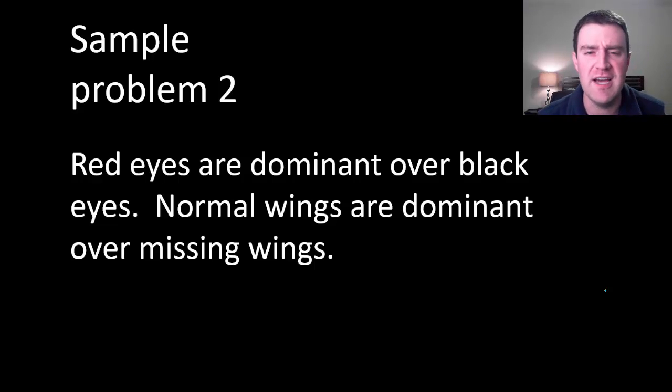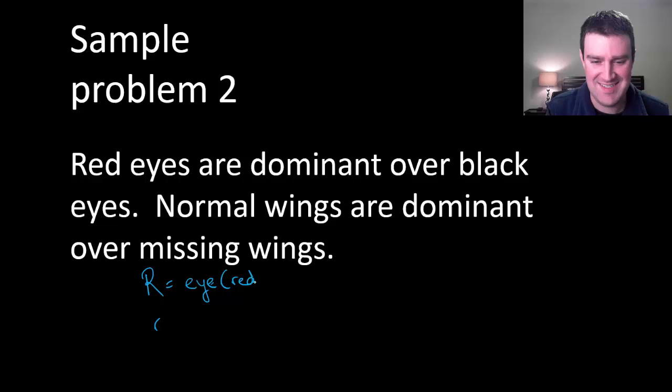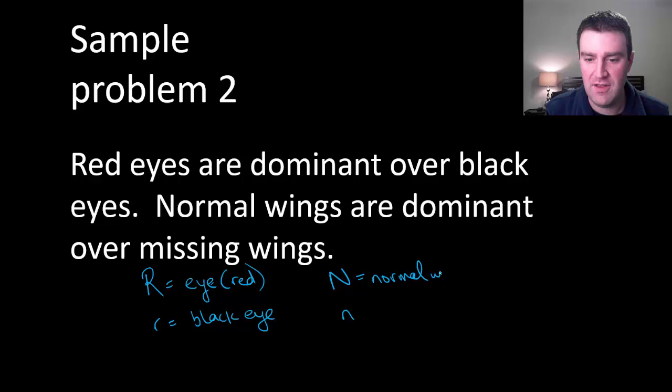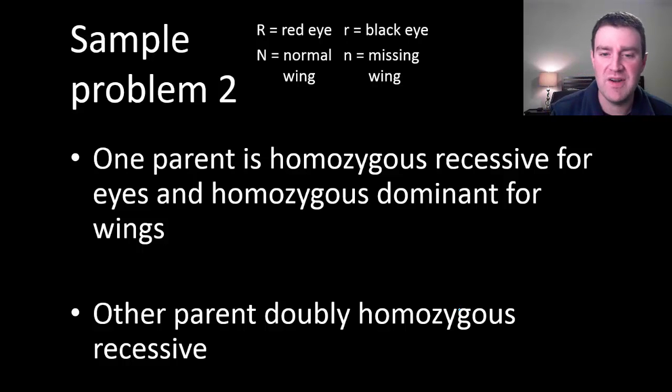Let's work another problem. What if red, looks like we're going to fruit flies here now. What if red eyes are dominant over black eye color? So let's use maybe R's again and maybe the uppercase is the dominant trait. Probably should have written red there. And the lowercase is the recessive trait, so black eye color. And then normal wings are dominant over missing wings. Maybe I'll use N's for that. So the capital N is the normal wings and the lowercase is the missing wings. So always make your legend first. Always write this down because that'll help you later.